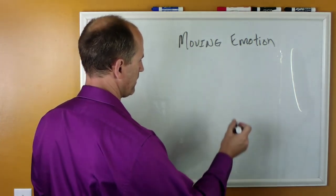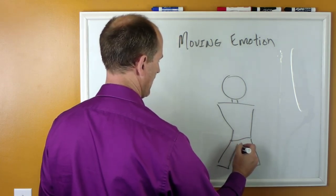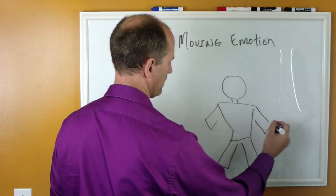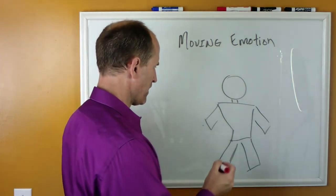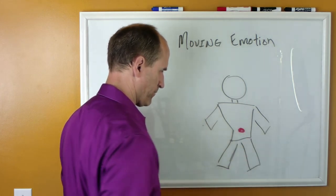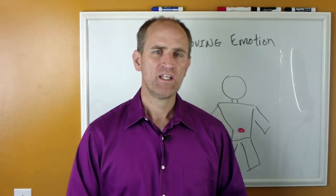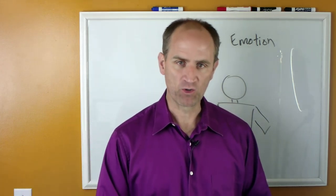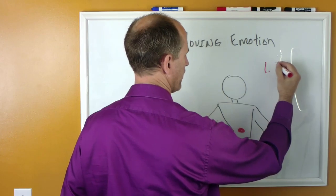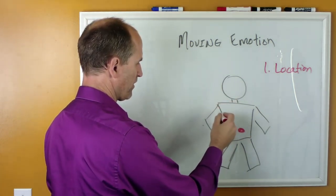I want you to imagine whatever emotion you're feeling. With that emotion, it's been trapped inside of you for a while, and with it being trapped inside of you it's been creating some different problems — some headaches, maybe some back pains. The first part is to identify where it's located. You can do this by just closing your eyes and asking yourself: where is this located? So the first step is location — where is it located?